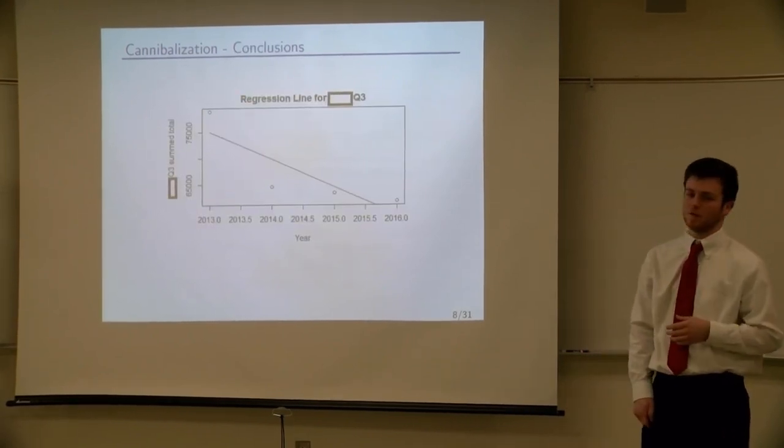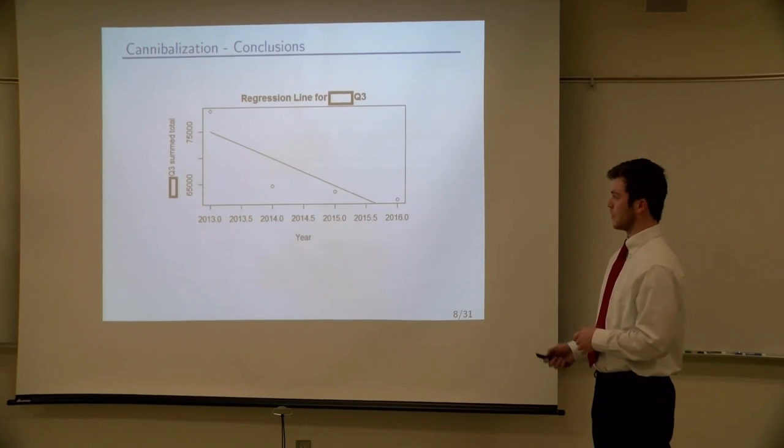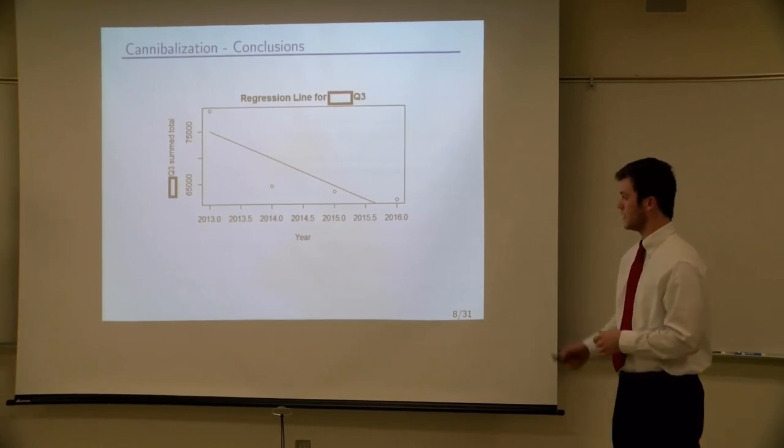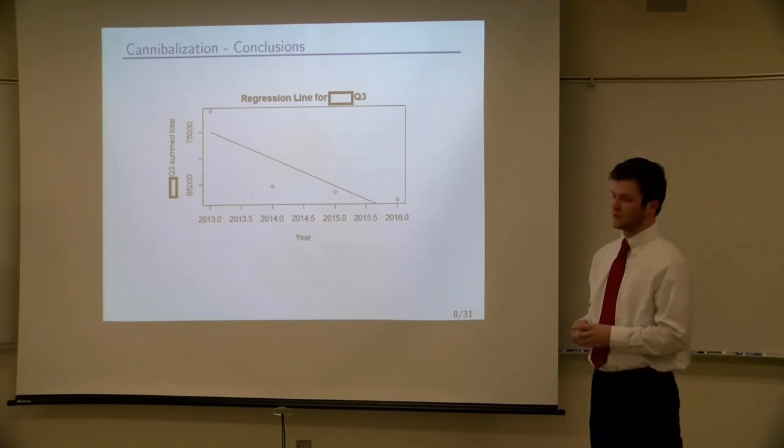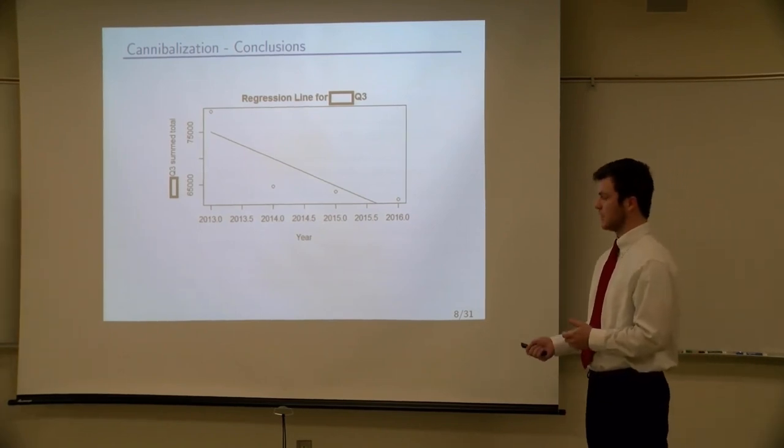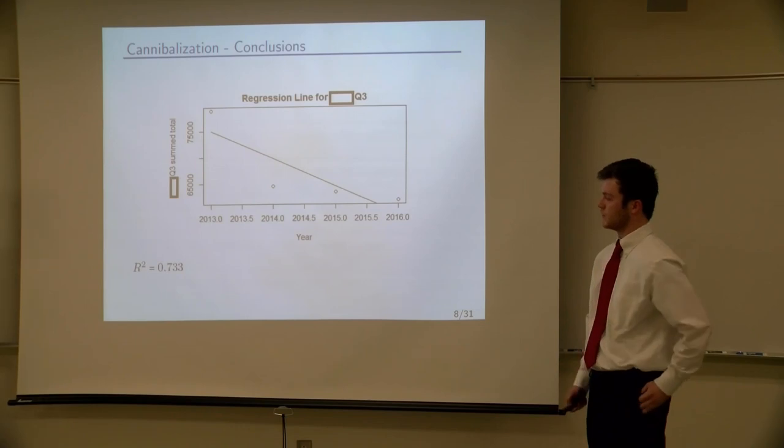This is just an example of one of our regression lines for our third quarter for one of our chairs. As you can see, there's only four data points on this graph, so that's just something to keep in mind going forward. The R squared value for this particular regression line is 0.733.